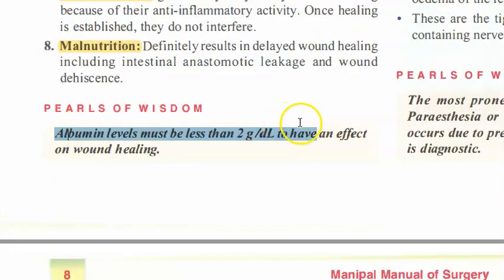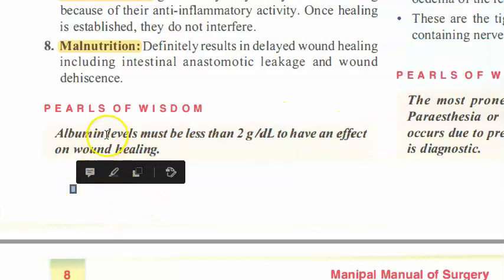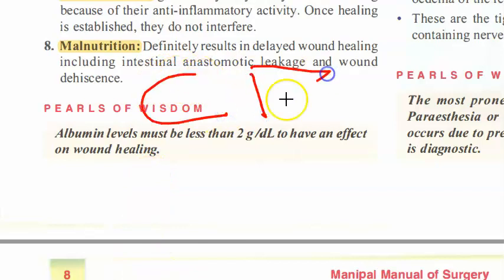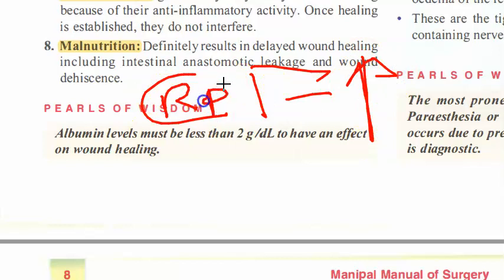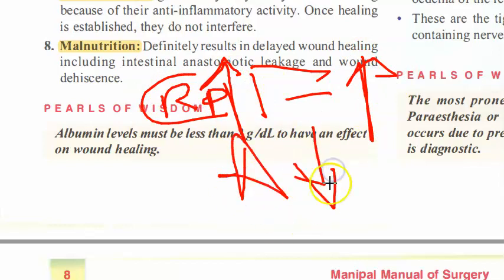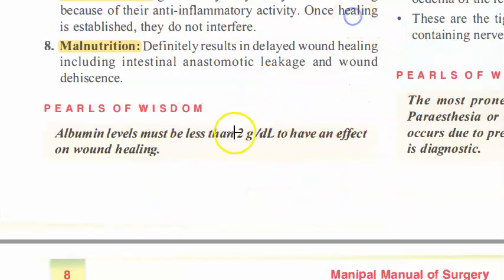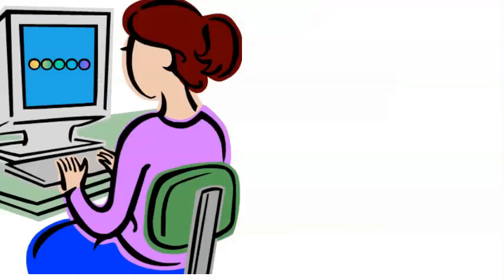Albumin levels must be less than 2 grams per deciliter to have an effect on wound healing. After injury, the liver increases production of C-reactive protein and fibrinogen, while albumin levels decrease. Remember, albumin should be less than 2 g/dL to impair wound healing. General factors include: age, malnutrition, diabetes, low albumin, malignancy, cytotoxic drugs, jaundice, uremia, steroids, zinc deficiency, and generalized infection.